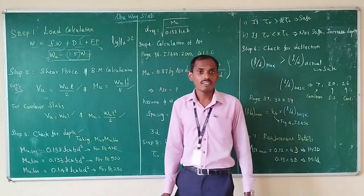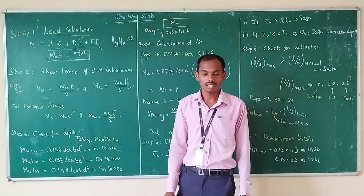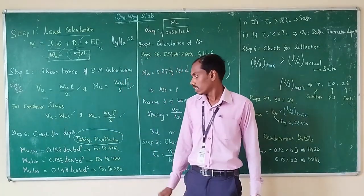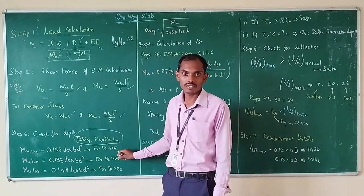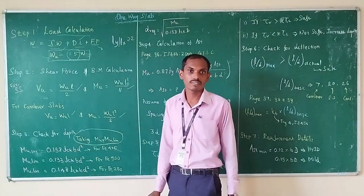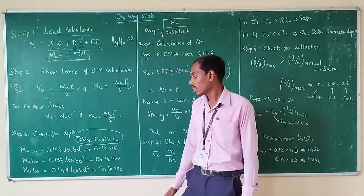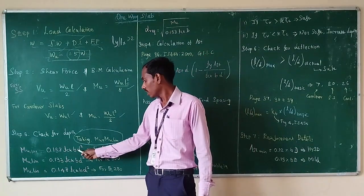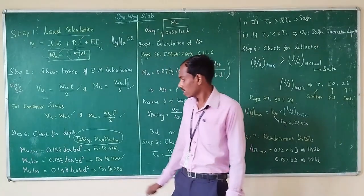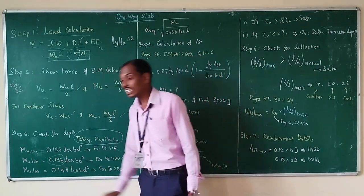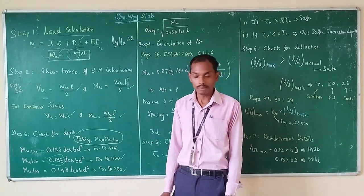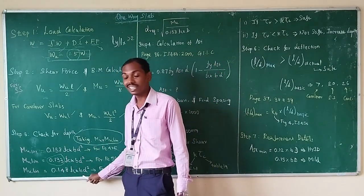The next step is to check whether the depth of the slab is sufficient. We set MU equal to MU limit. For Fe 415 grade steel, MU limit = 0.138 × fck × b × d². For Fe 500, the factor is 0.133 × fck × b × d². For Fe 250 (mild steel), MU limit = 0.148 × fck × b × d².